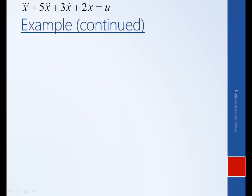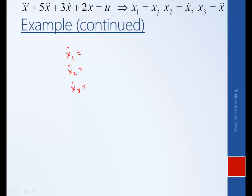So here we repeat the original differential equation. We're going to do this change of variables in order to put it into state-space form. For each of the state variables, we're going to have a single differential equation. For our first state variable x1, x1 is equal to x, therefore its first derivative is x dot. In terms of the state variables we've defined, x dot also happens to be equal to x2. So there's our first differential equation.